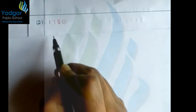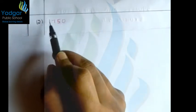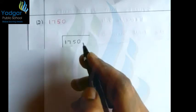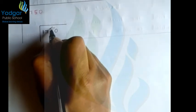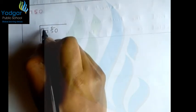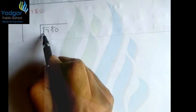Let us solve one more problem: 1750. First, let us group the digits using the division method. For grouping, start from the right side: '17' and '50'. The nearest square number to 17 is 16, since 4²=16 and 5²=25.